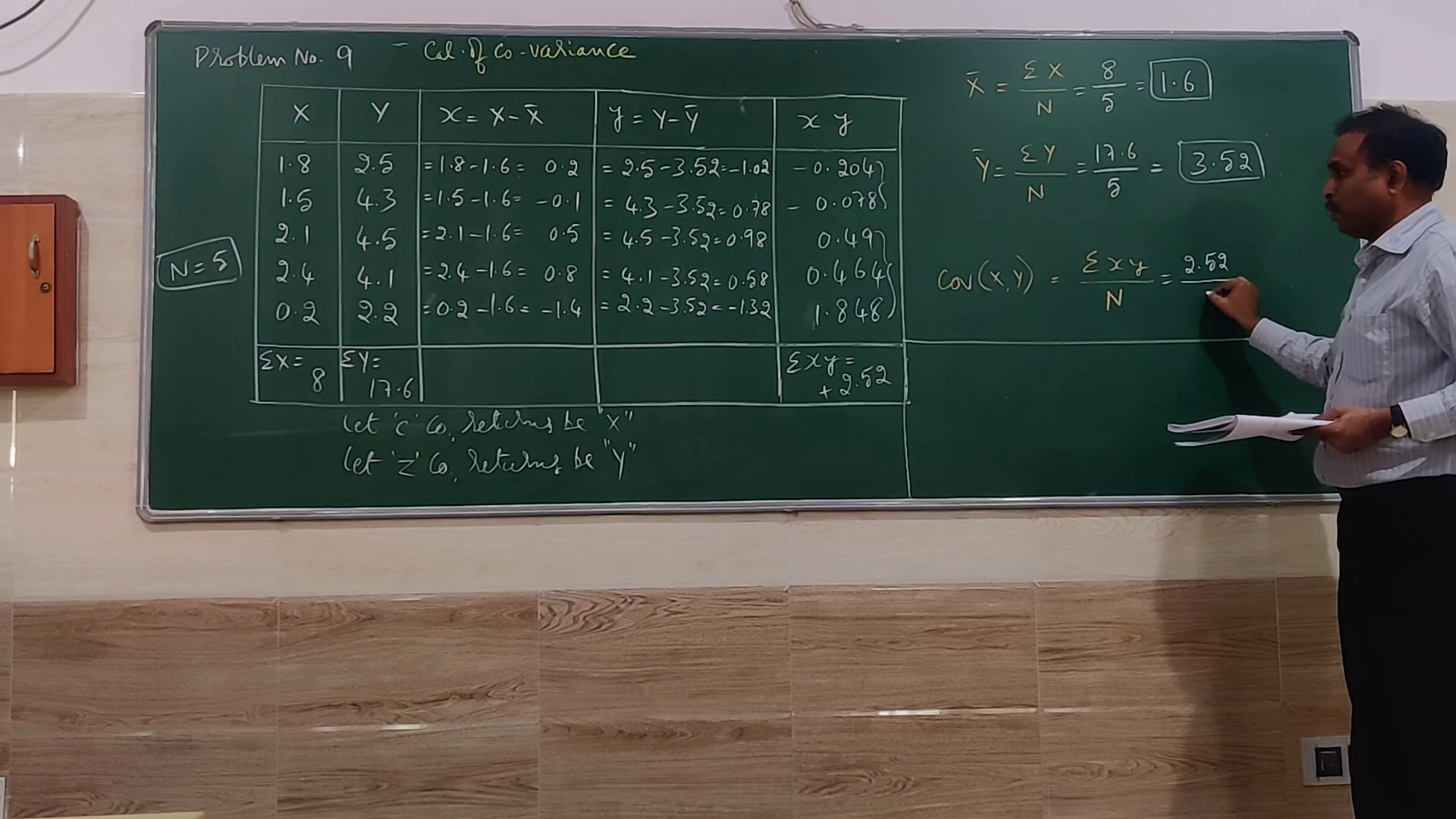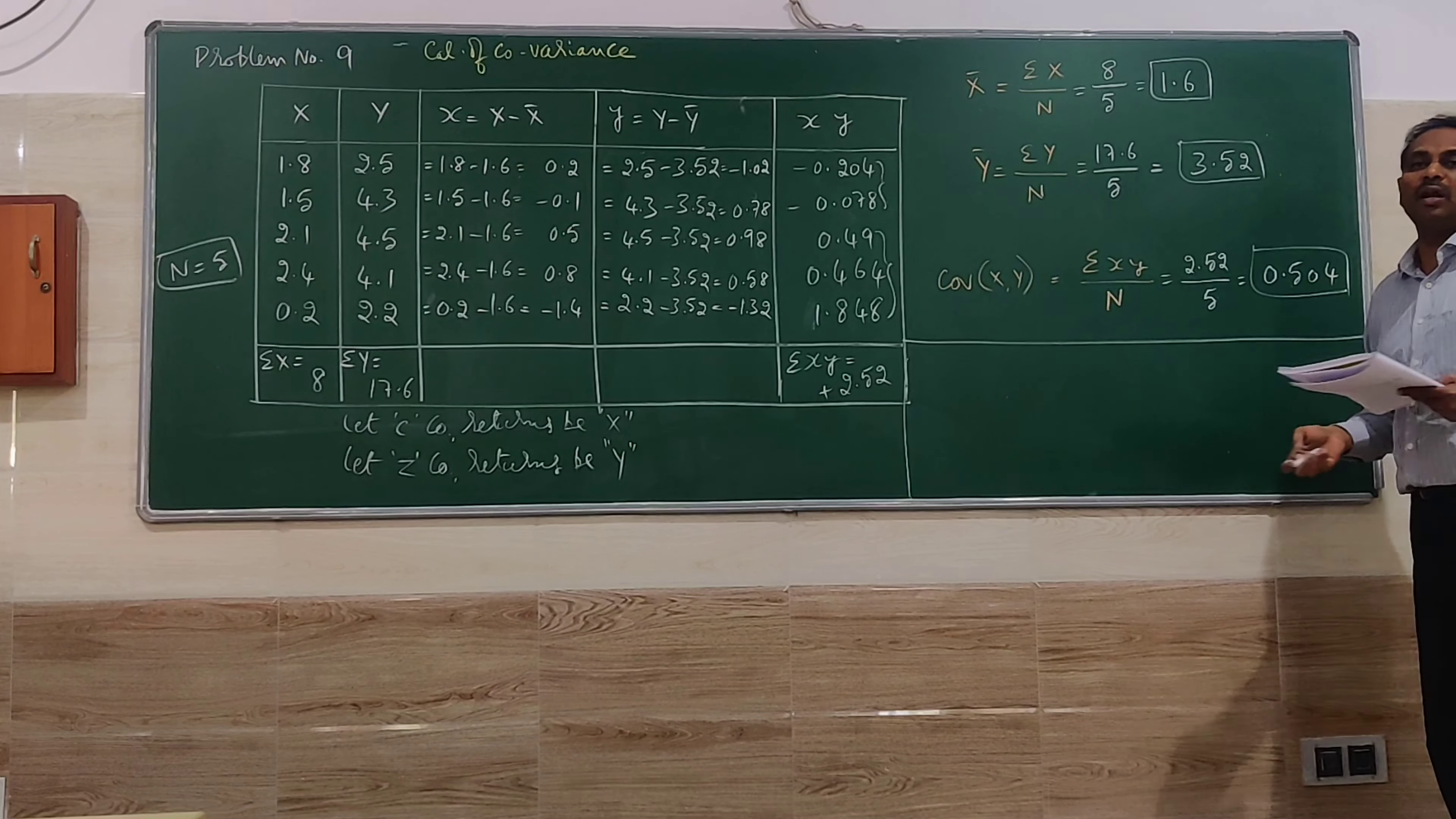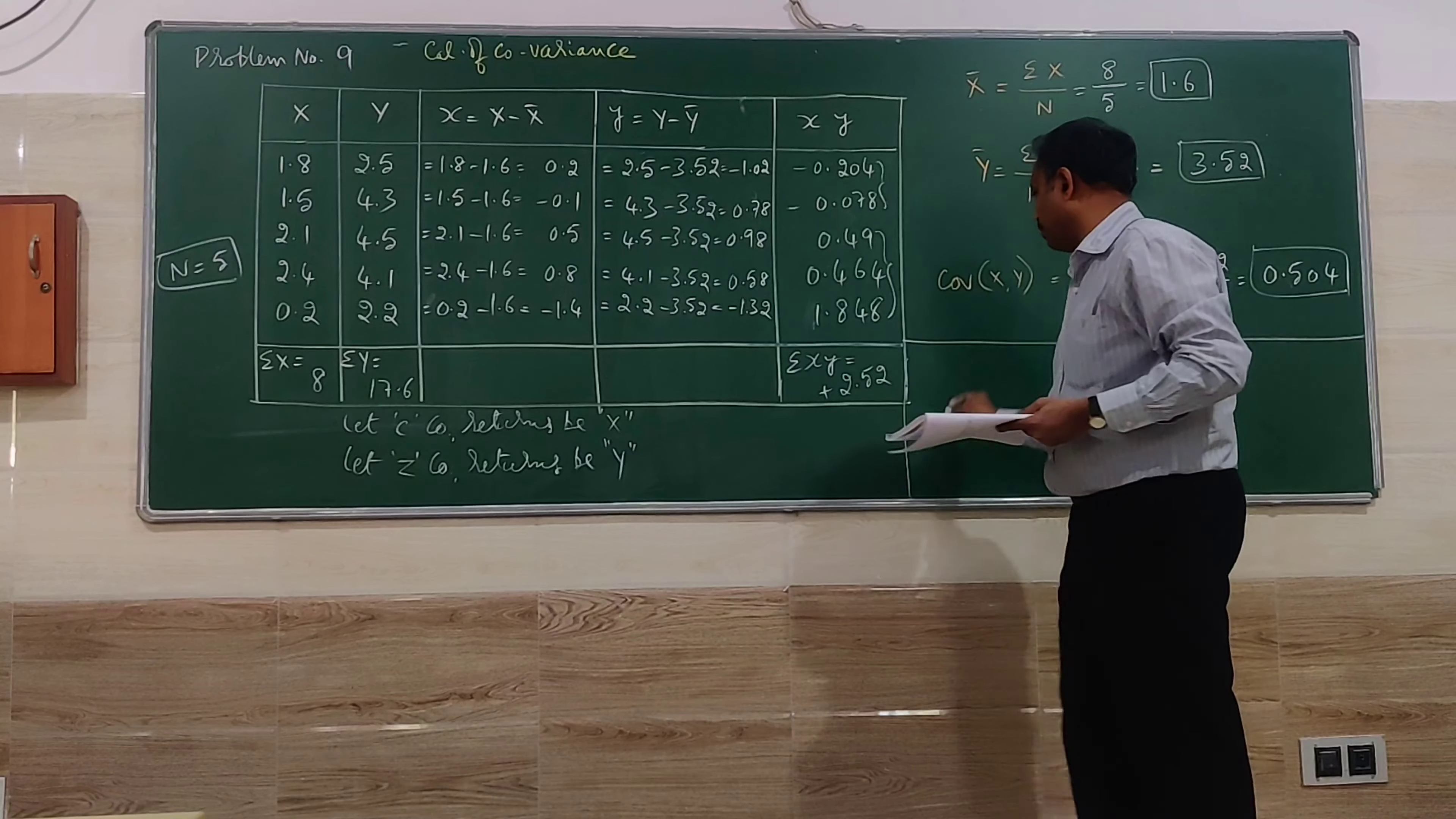This will be used for finding the covariance. 2.52 divided by 5, you get 0.504. So this is positive relation between two shares returns, X and Y. I can say otherwise, the returns of C company and returns of Z company.